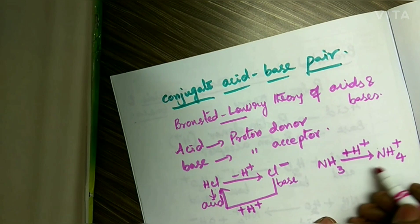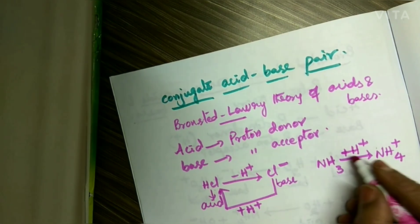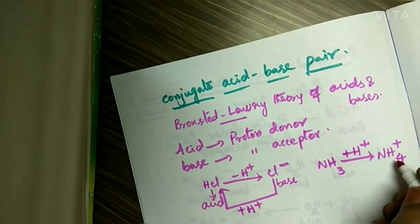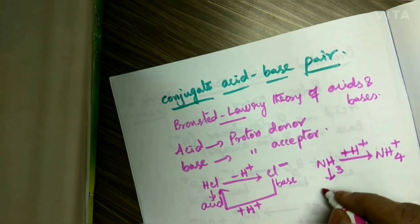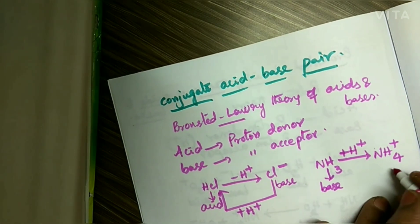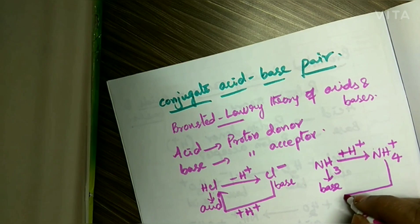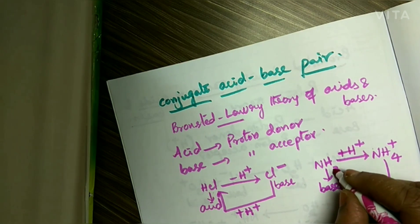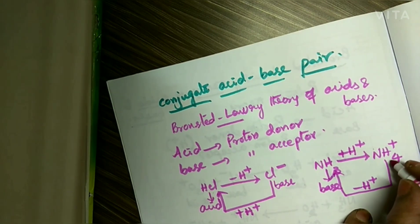In this example, ammonia by taking a proton it is forming ammonium ion NH4⁺, so it is a base. And ammonium ion by losing a proton (minus H⁺) it acts as an acid.